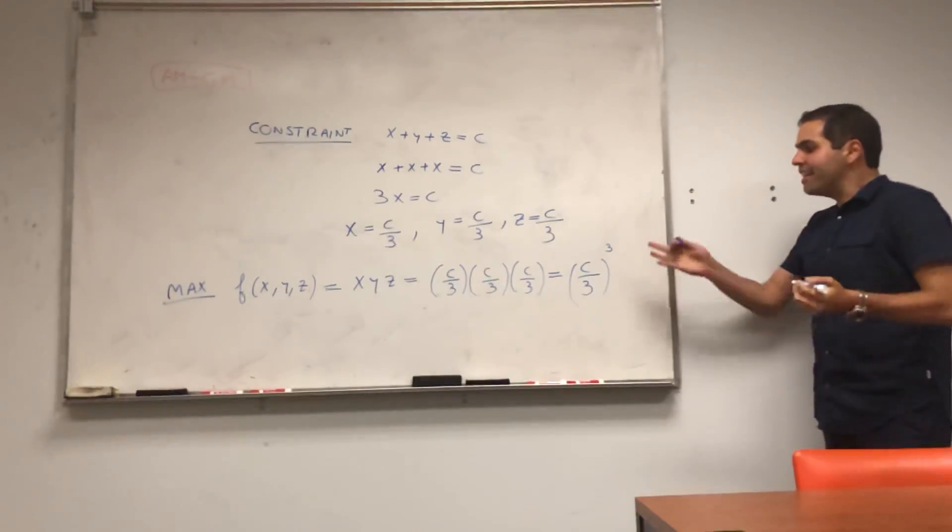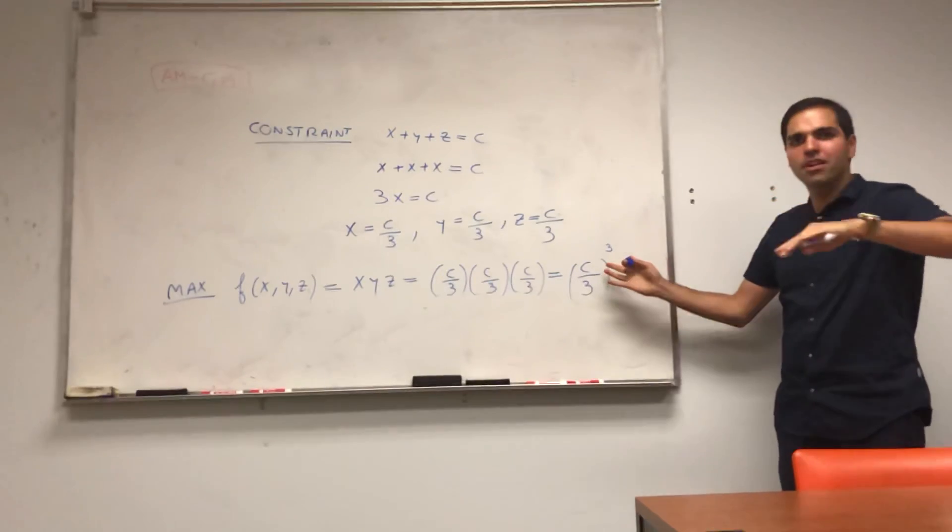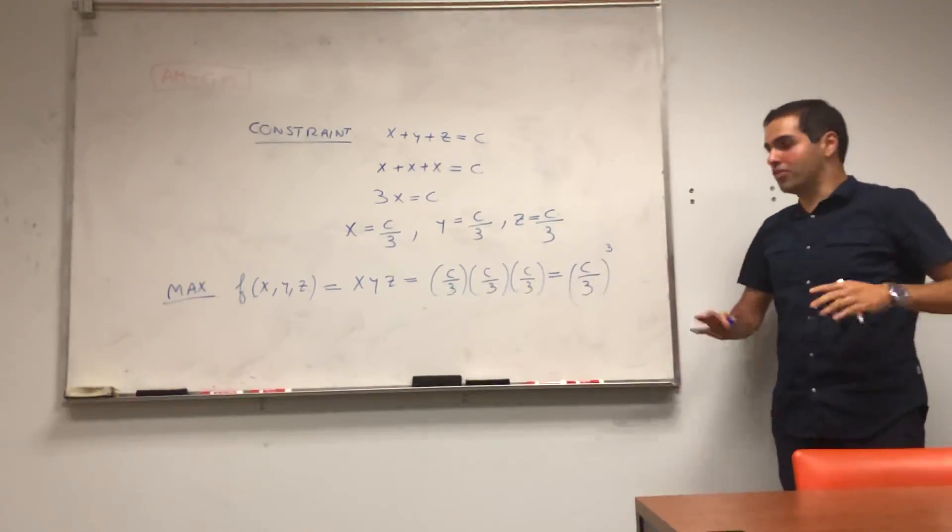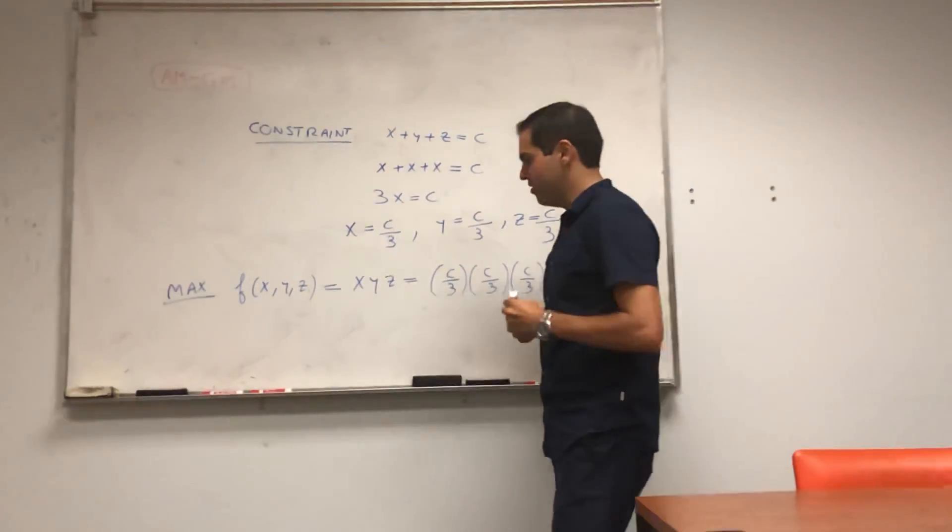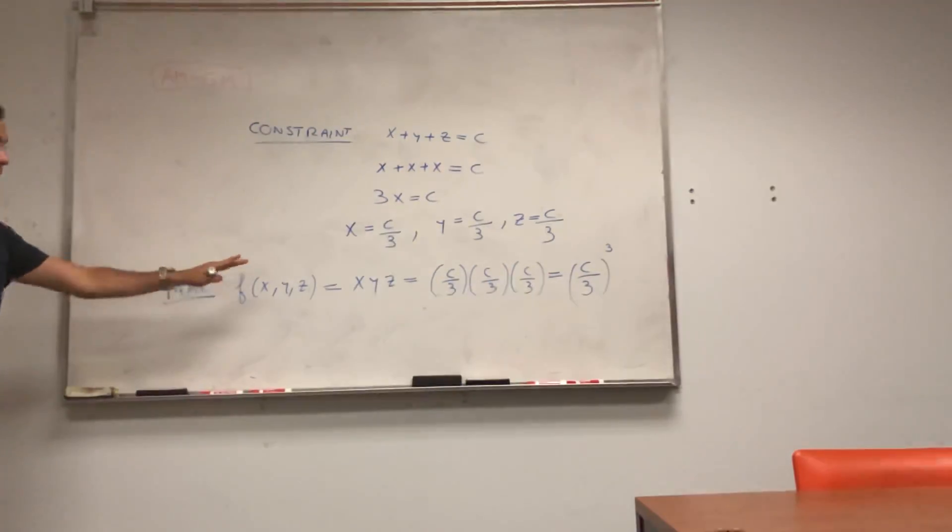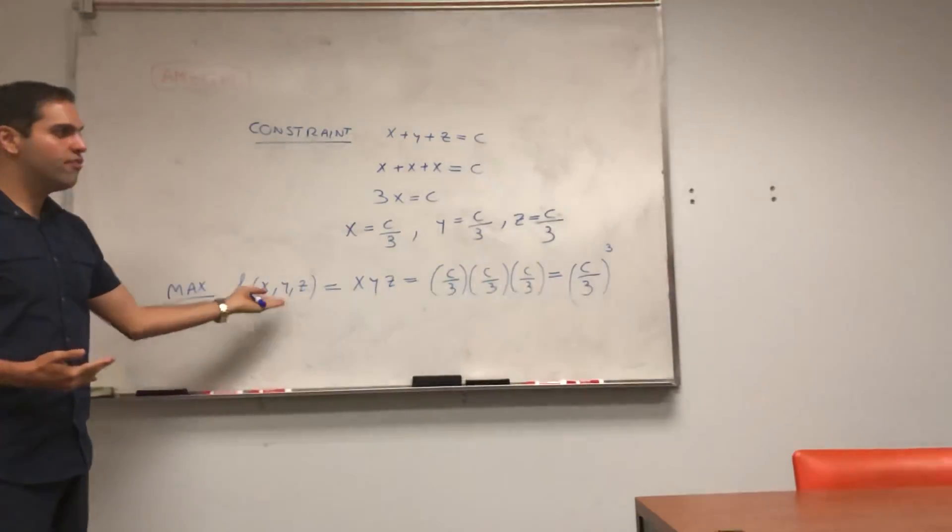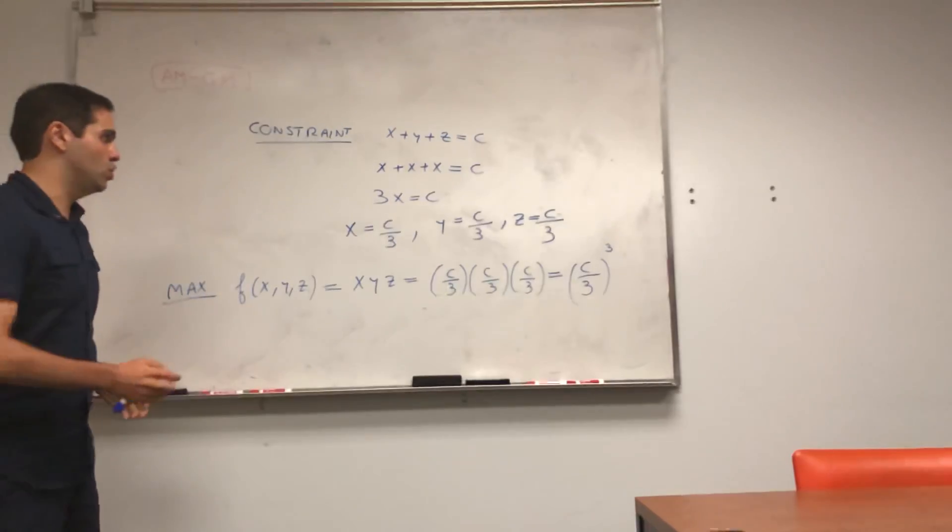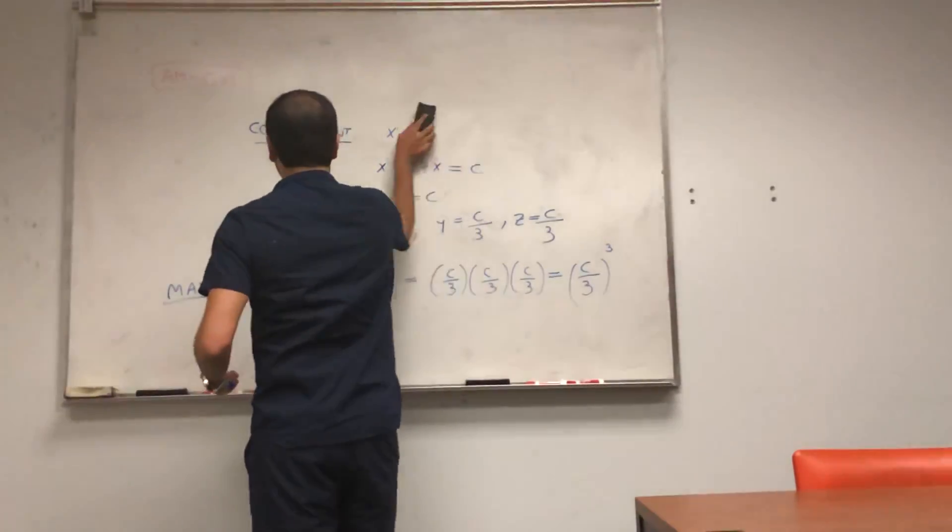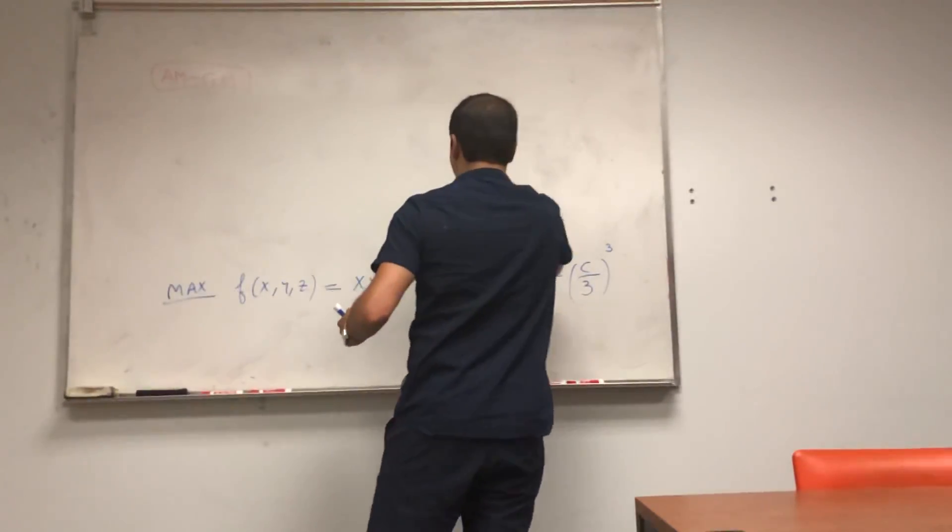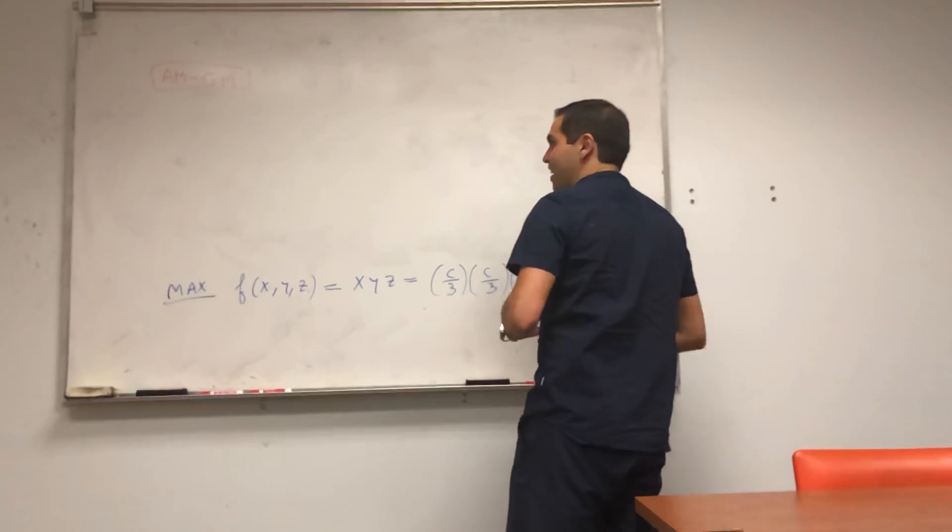And again, this can't really be the minimum, because if you look, the minimum is just 0 in this case. All right. So that's great. What does that tell us? It tells us that the maximum value of f is c over 3 cubed. And now in the next step, let's just extract some useful info from that.